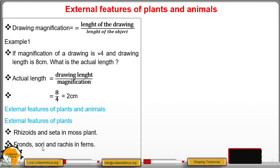We have fronds, what we call sori, and rachis in ferns. So fronds are actually the group of leaves which are large. We have the sori which are holding the spores, and then we have the rachis. These rachis are the ones that are holding the leaflets together in position.